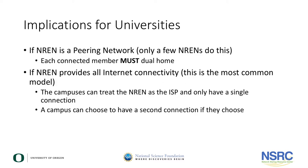It is important to note that if the NREN is a peering network that provides a limited set of IP routes, then the connected members are forced to dual home. If the NREN acts as an ISP, the connected members can just use the NREN on a single connection, or if they have other requirements and the resources to make it work, they can choose to dual home if they want.